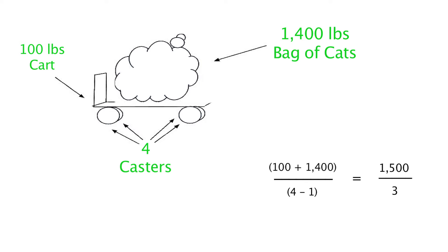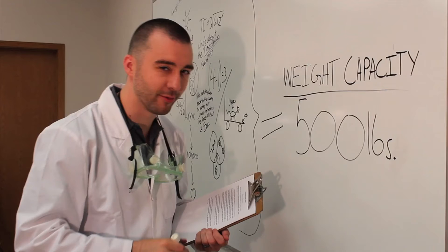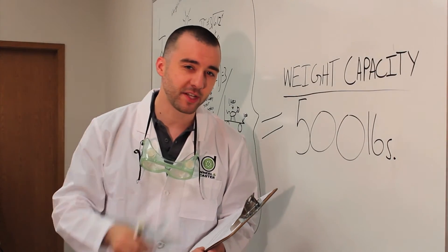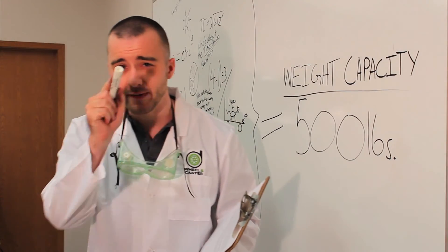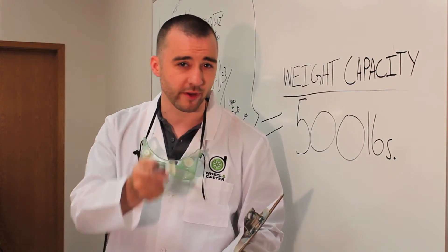So we divide 1,500 by 3, wait for the computer to crunch the numbers, and arrive at our recommended weight capacity of 500 pounds per caster. The weight will be evenly distributed over the four casters and the safety margin built into our equation will help prevent chance of caster failure.